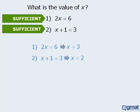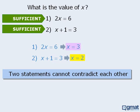Now can you see the problem here? From statement 1, we concluded with certainty that x must equal 3, and from statement 2, we concluded with certainty that x must equal 2. The important feature of data sufficiency questions is that the two statements always provide true information. If this is the case, then the two statements can never contradict each other. Since the two statements in this question contradict each other, this could never be an official GMAT question.